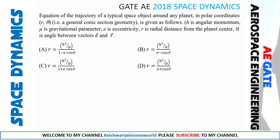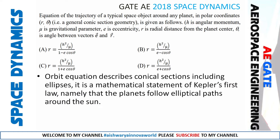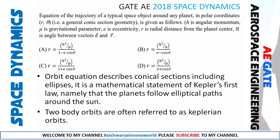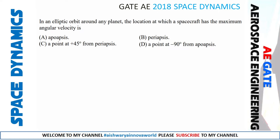Next question: The equation of a trajectory of a typical space orbit object around any planet in polar coordinates (r, θ) — where h is angular momentum, mu is the gravitational parameter, e is eccentricity, r is the radial distance from the planet center, and θ is the angle between vector e and r. For a conic section including the ellipse, you apply the standard formula, and the answer is option C.